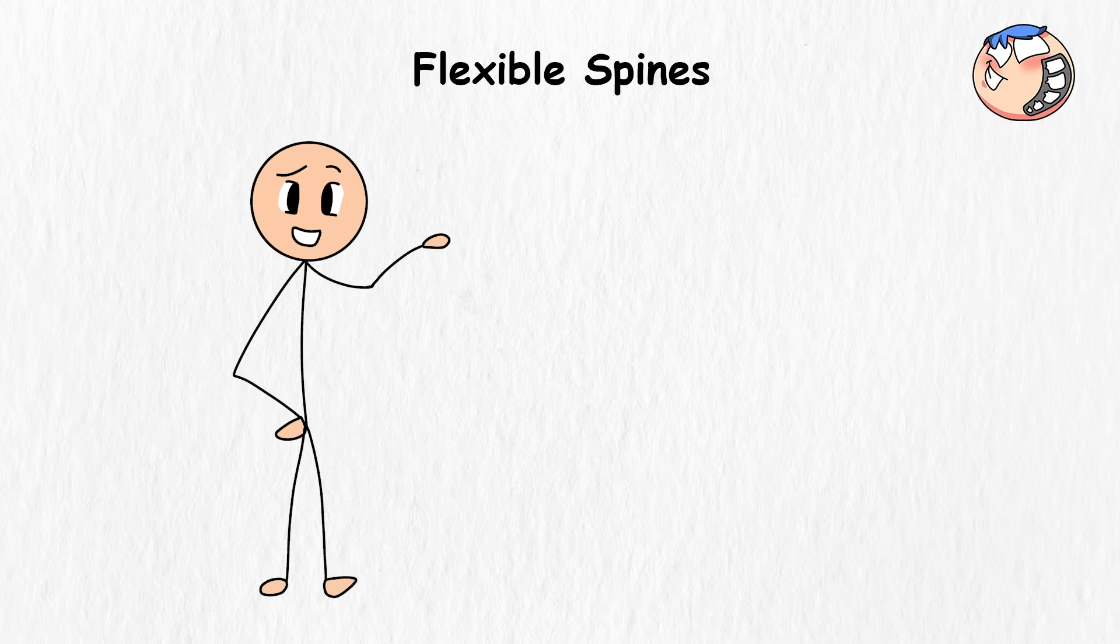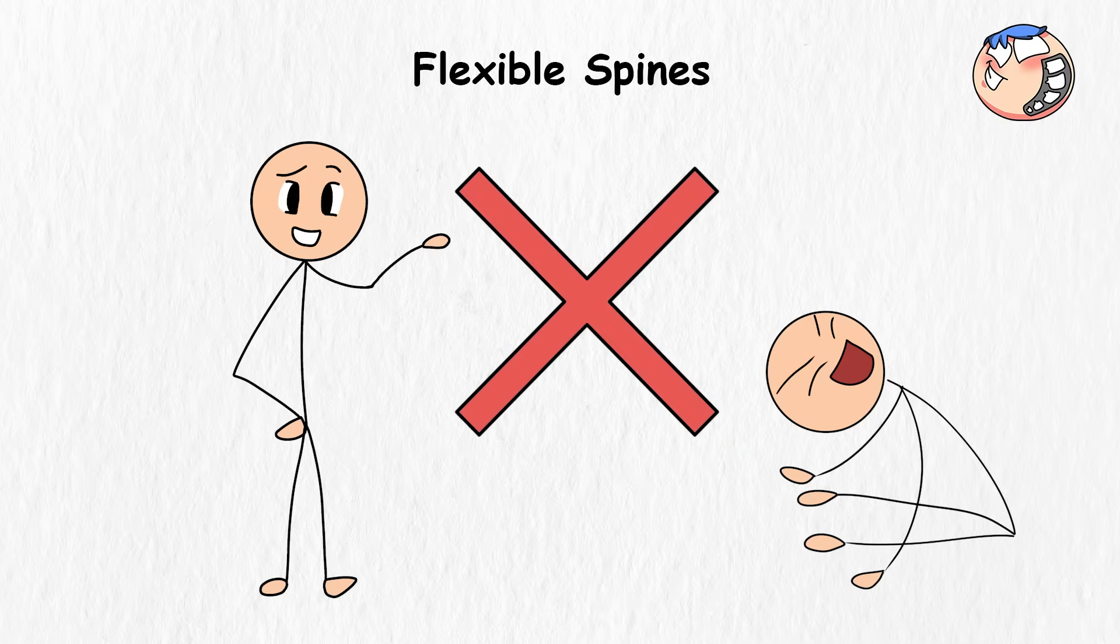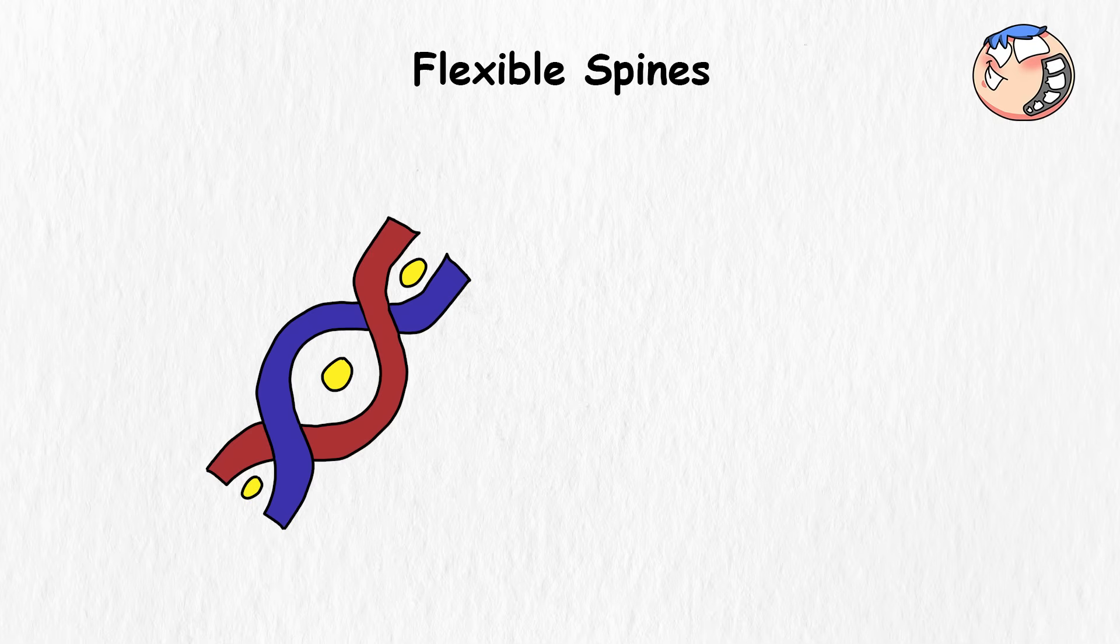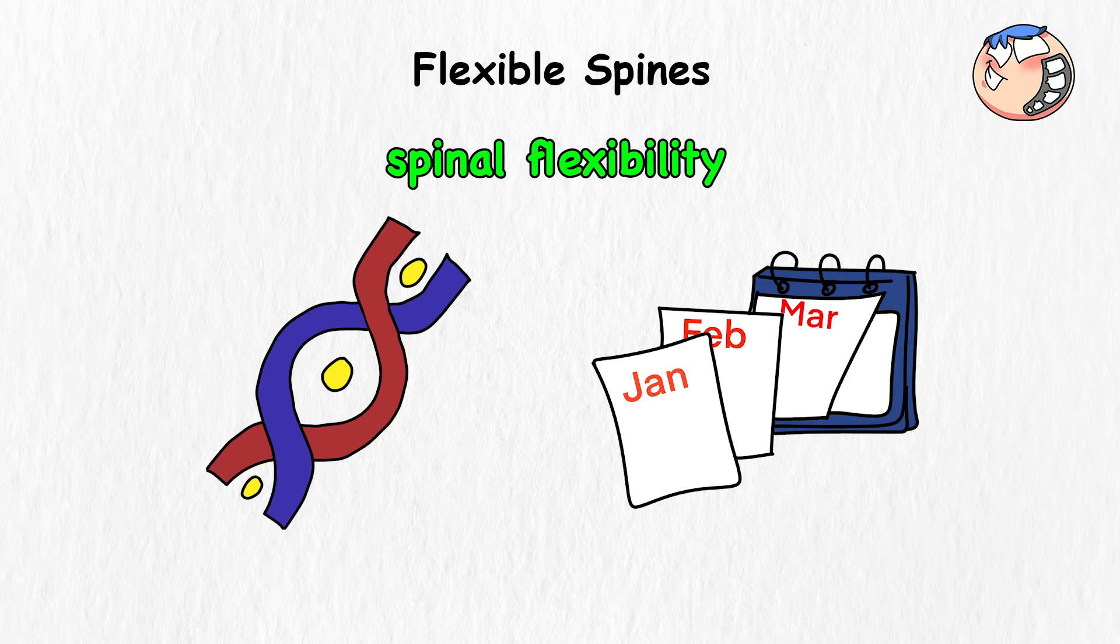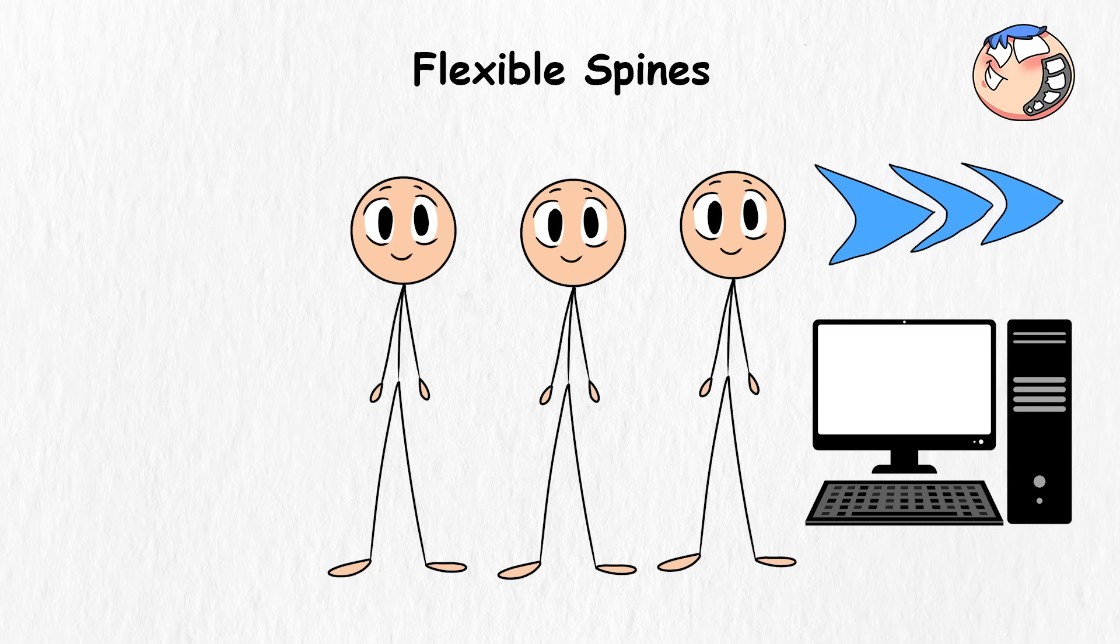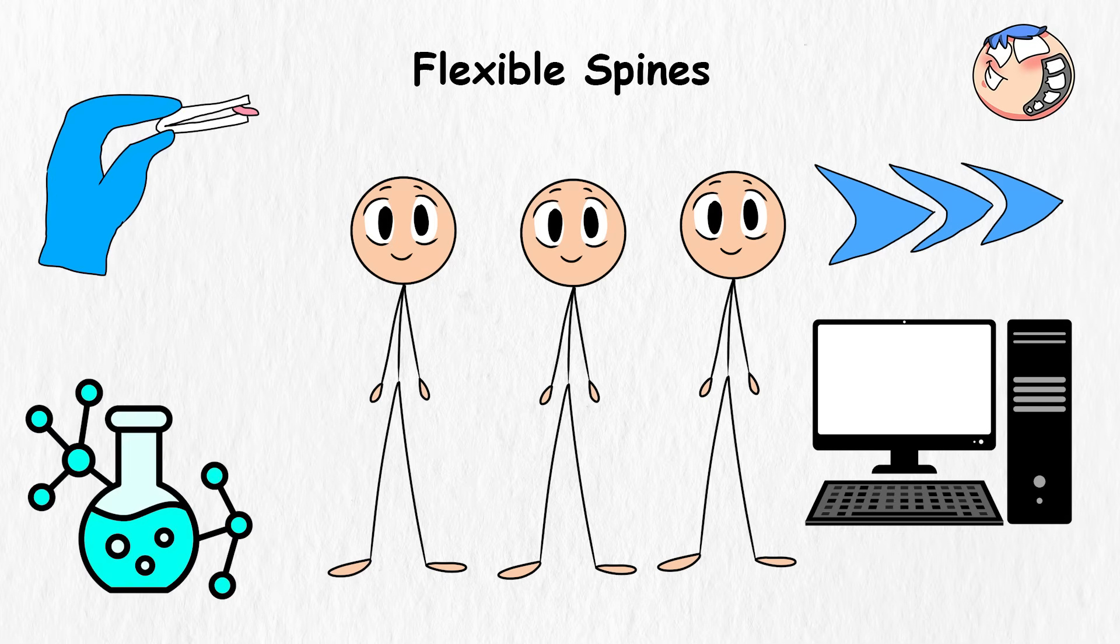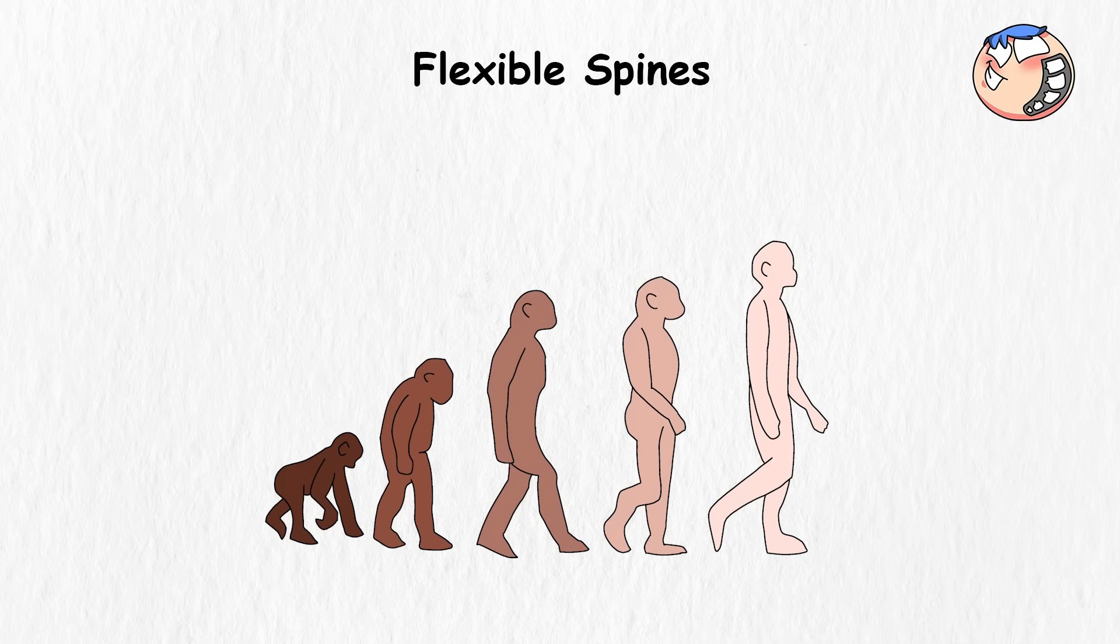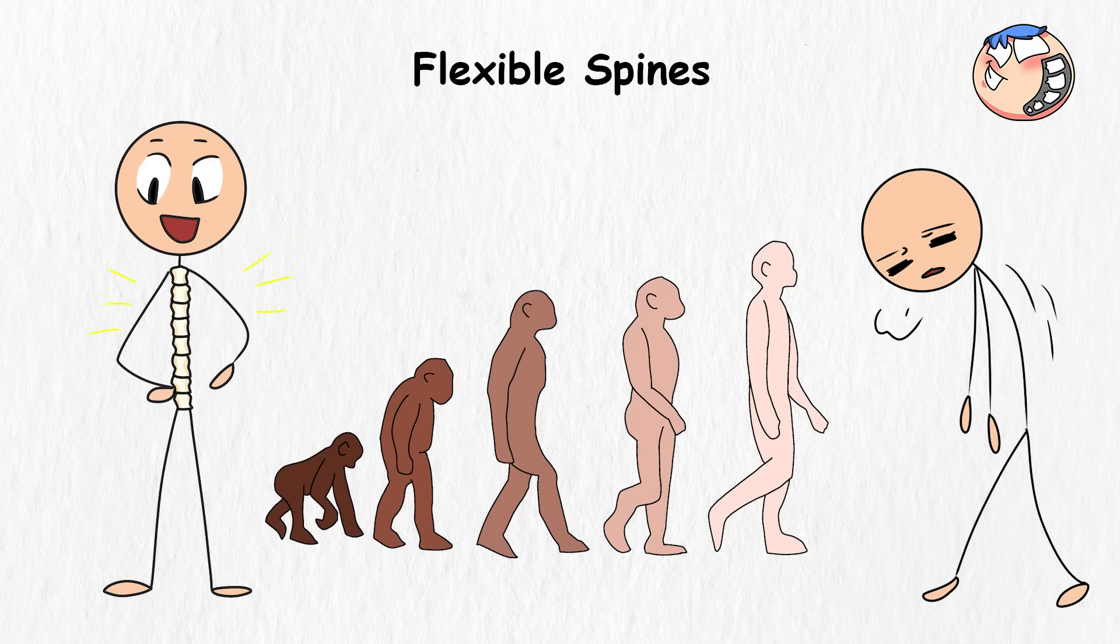Now, even though the chances of us getting bendy spines wouldn't happen overnight, tiny genetic changes favoring spinal flexibility could accumulate over the next thousand years. And trust humans to always try and get what we want faster, so technology might turbocharge this process, and things like CRISPR, bioengineering, and nanotech might allow us to force evolution to give our stiff spines a futuristic glow-up.